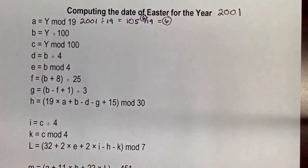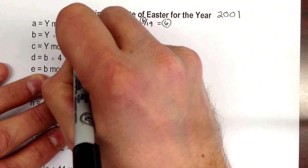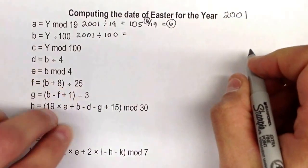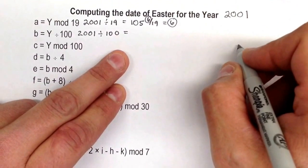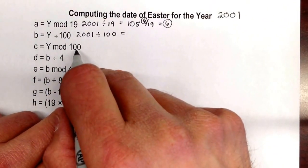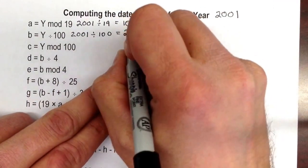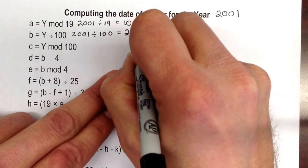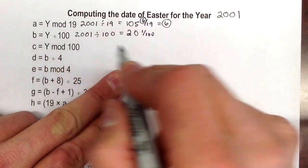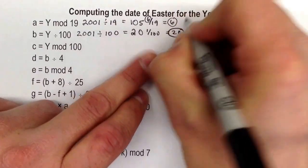Now let's go to b. And b is going to be y divided by 100. So the year 2001 divided by 100 equals, now we could use this as a decimal or a fraction, but since you see in the next one we need it as a fraction anyway, why don't we get it as a fraction? So it's going to be 20 and one hundredth. The integer part of that, which is all integer division here, the integer part of that is 20. So that's going to be b.